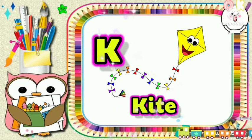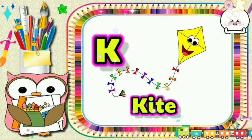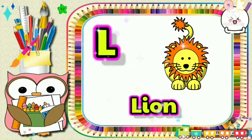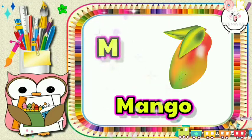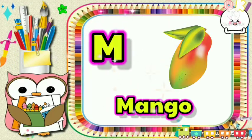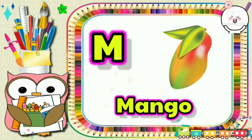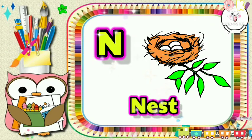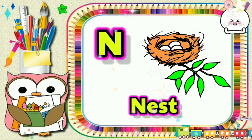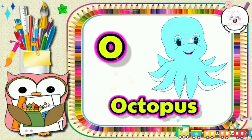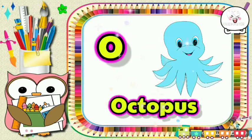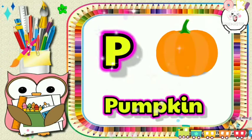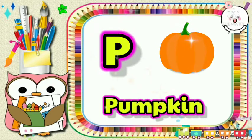K for kite, L for lion, M for mango, N for nest, O for octopus, B for pumpkin.